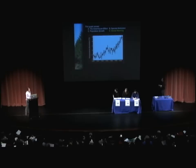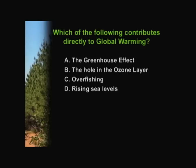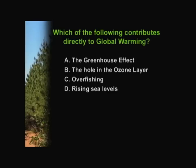Now we're going to go on to our next question. Which of the following contributes directly to global warming? A, the greenhouse effect; B, the hole in the ozone layer; C, overfishing; or D, rising sea levels? A — very good, the greenhouse effect.